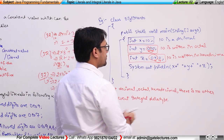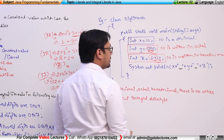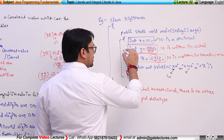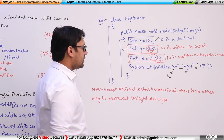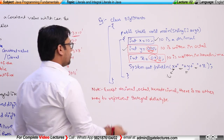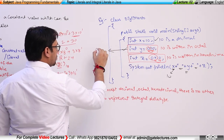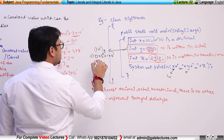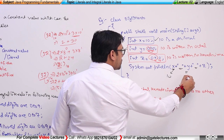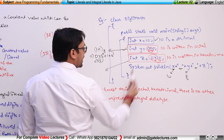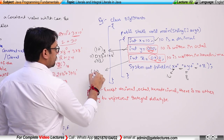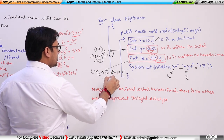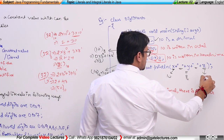When we print these values, Java always outputs the decimal equivalent. For x = 10 (decimal), it prints 10. For y = 010 (octal), we convert: 0×8⁰ + 1×8¹ = 8, so it prints 8. For z = 0x10 (hexadecimal), we convert: 0×16⁰ + 1×16¹ = 16, so it prints 16. The output is 10, 8, and 16.